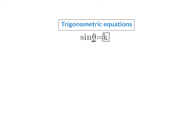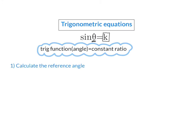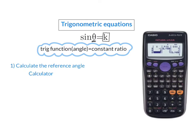Once the given equation is in the standard form — a trig function with an angle equal to a constant ratio — we have a few steps to follow. Our first step is to calculate the reference angle using our calculator: shift, then the specific trig function, then the ratio given. It is very important to realize that the reference angle is an acute angle in the first quadrant. Therefore, we always ignore the sign of the ratio here, because we want the value in the first quadrant.